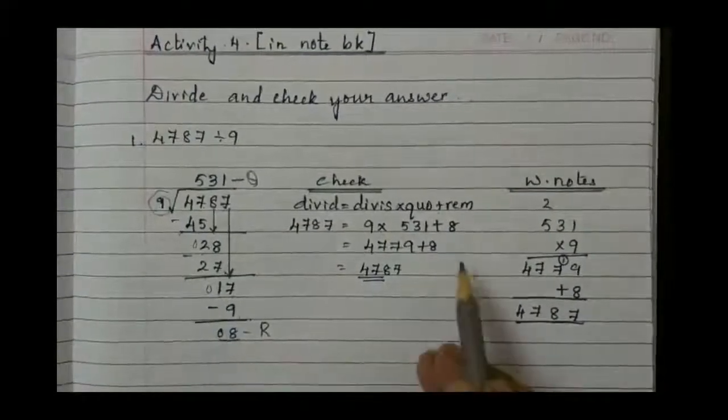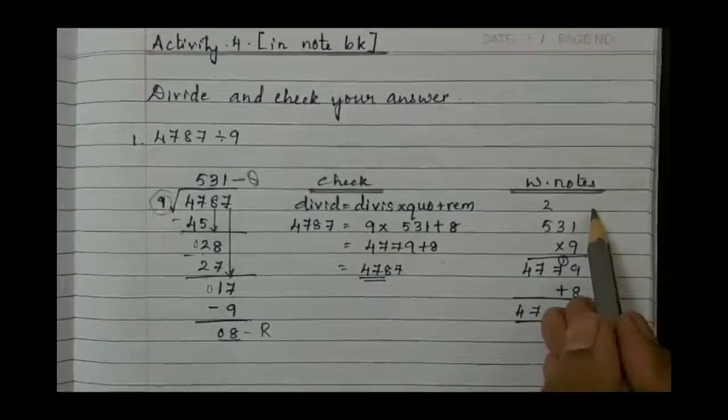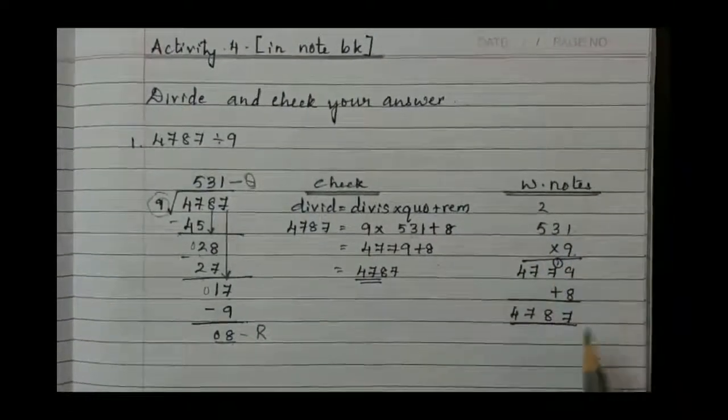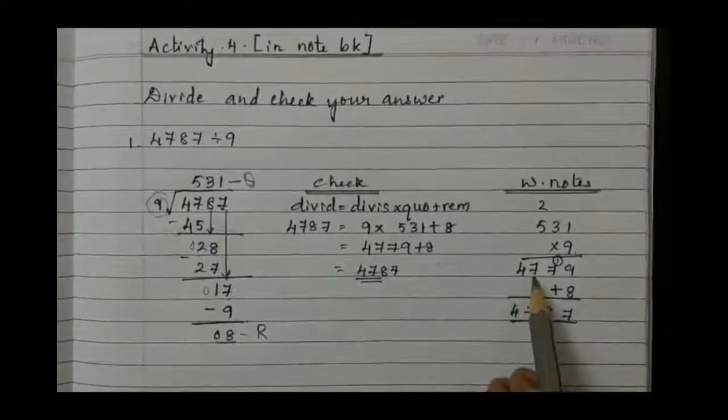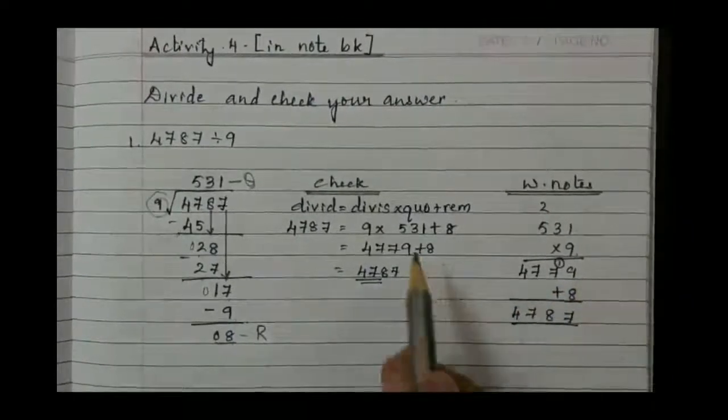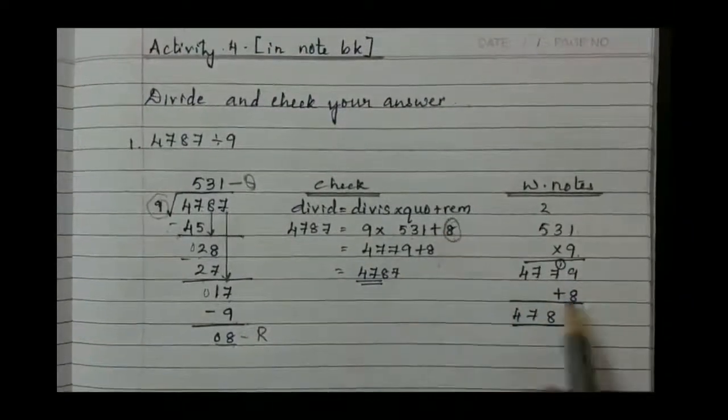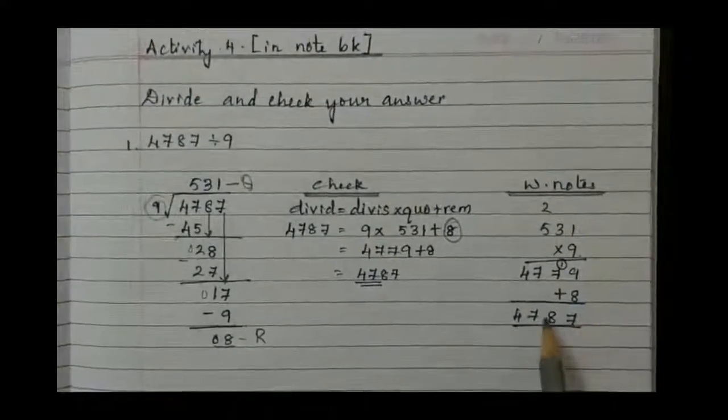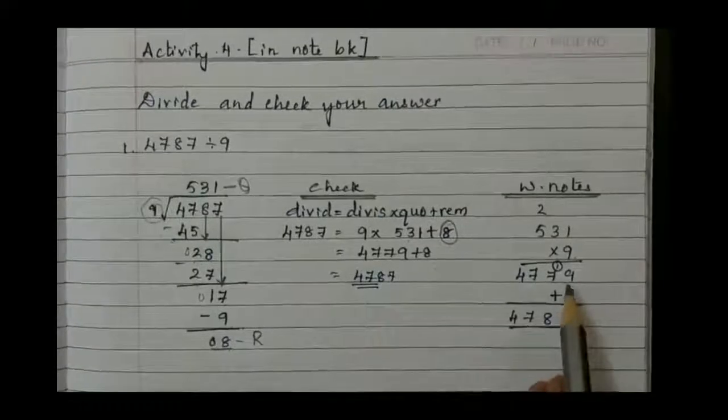Remainder is 8. Go for the working note. There you write down 531 into 9. If you multiply you are going to get 4779. Then what is remaining? 8 is remaining.